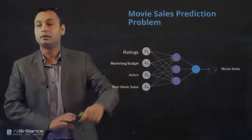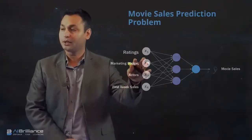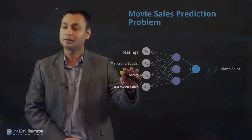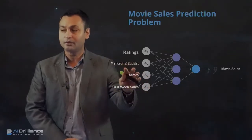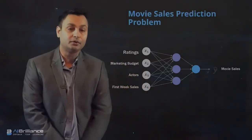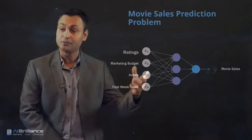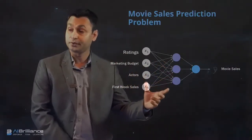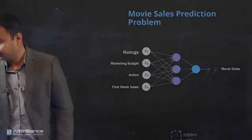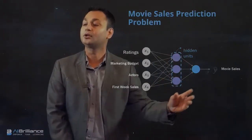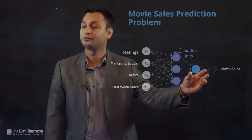Here is another example. On top of ratings, marketing budget, and first week sales, we have also added a feature called actors. Depending on which actor is in the movie, that might influence movie sales. We have also added hidden units — separate neurons — even before predicting the final output.